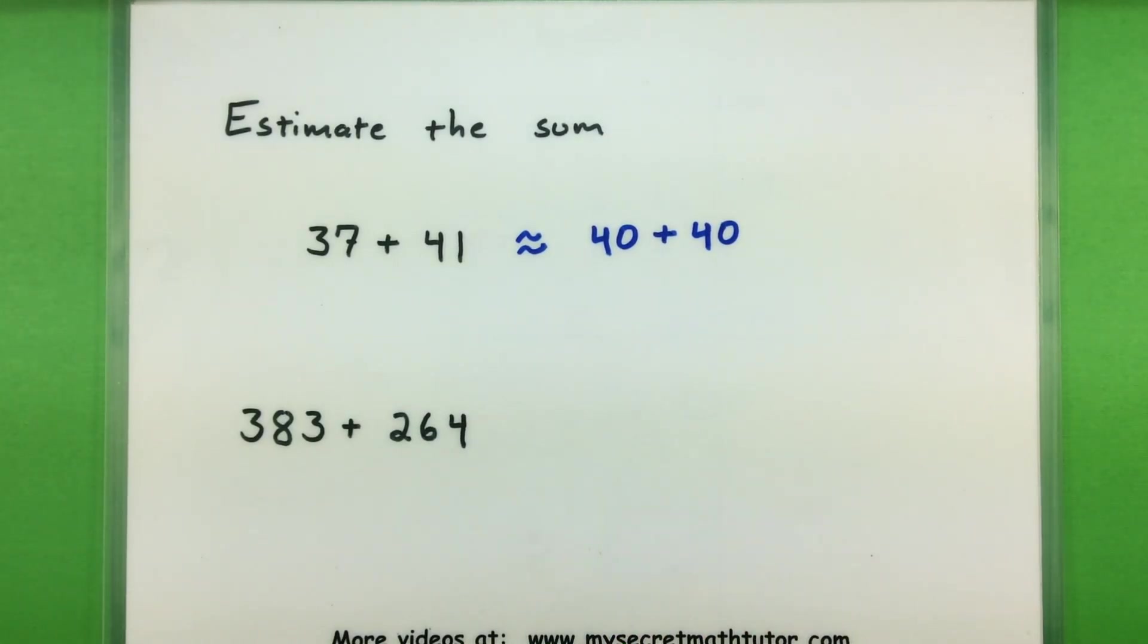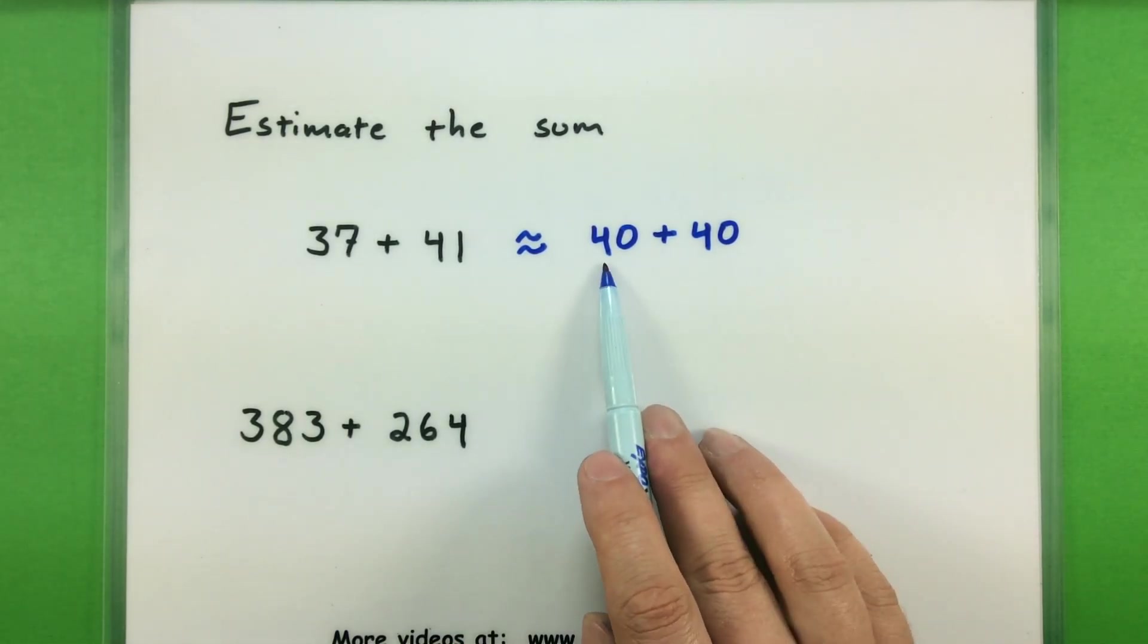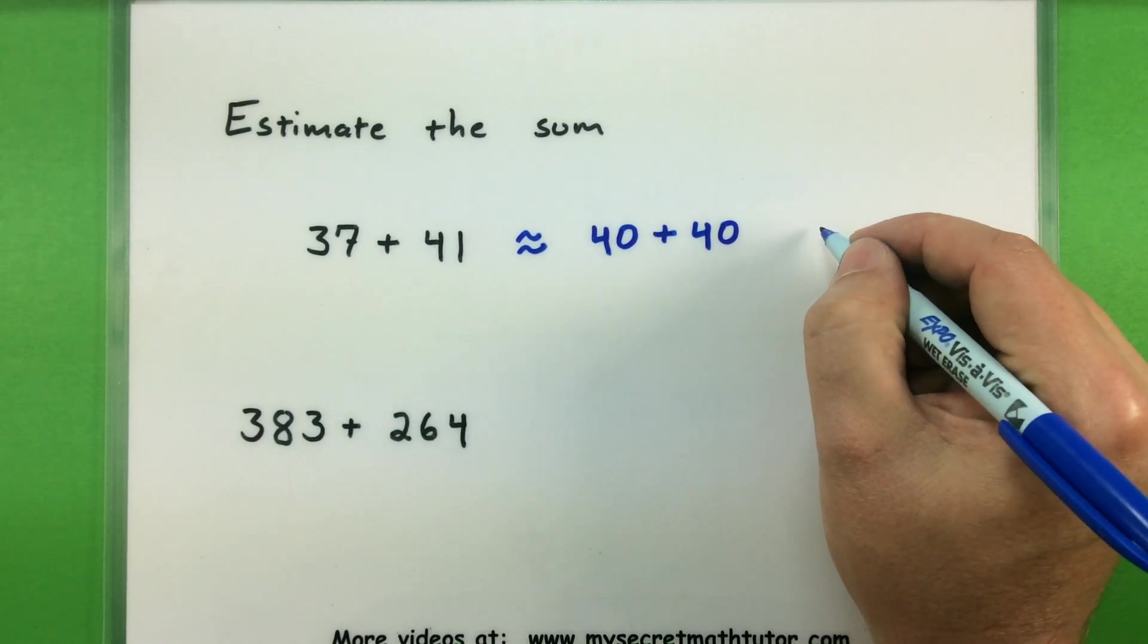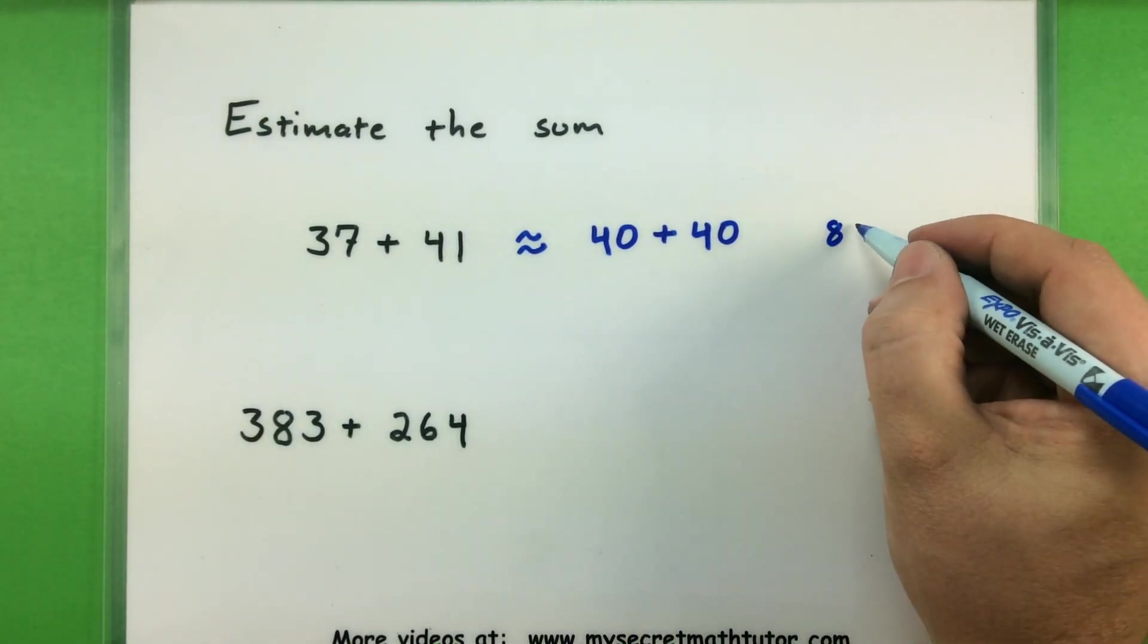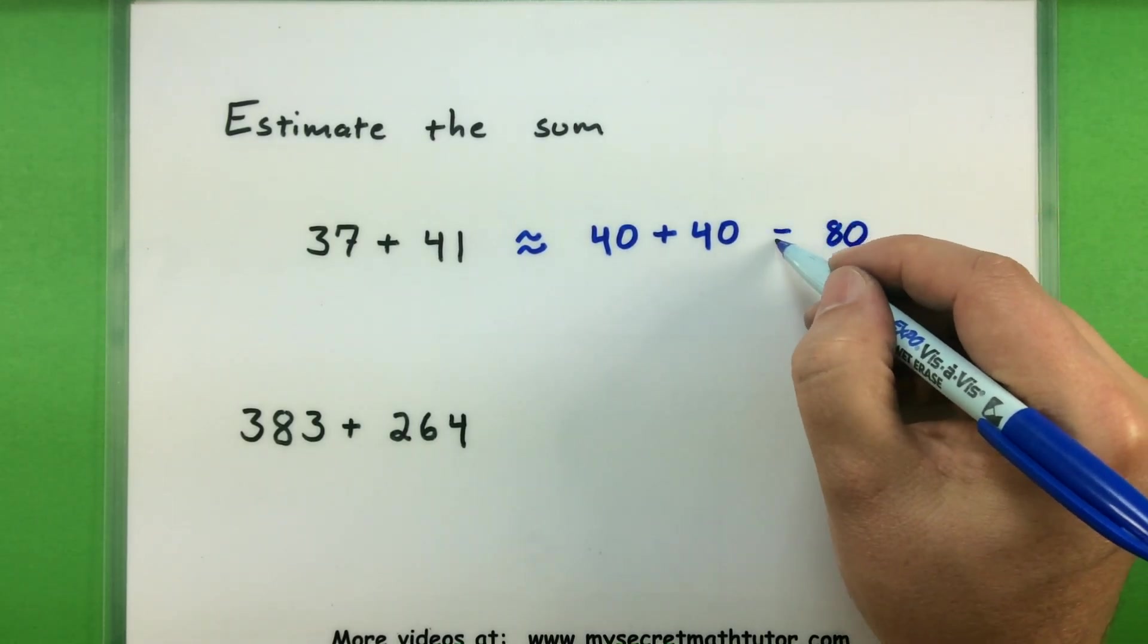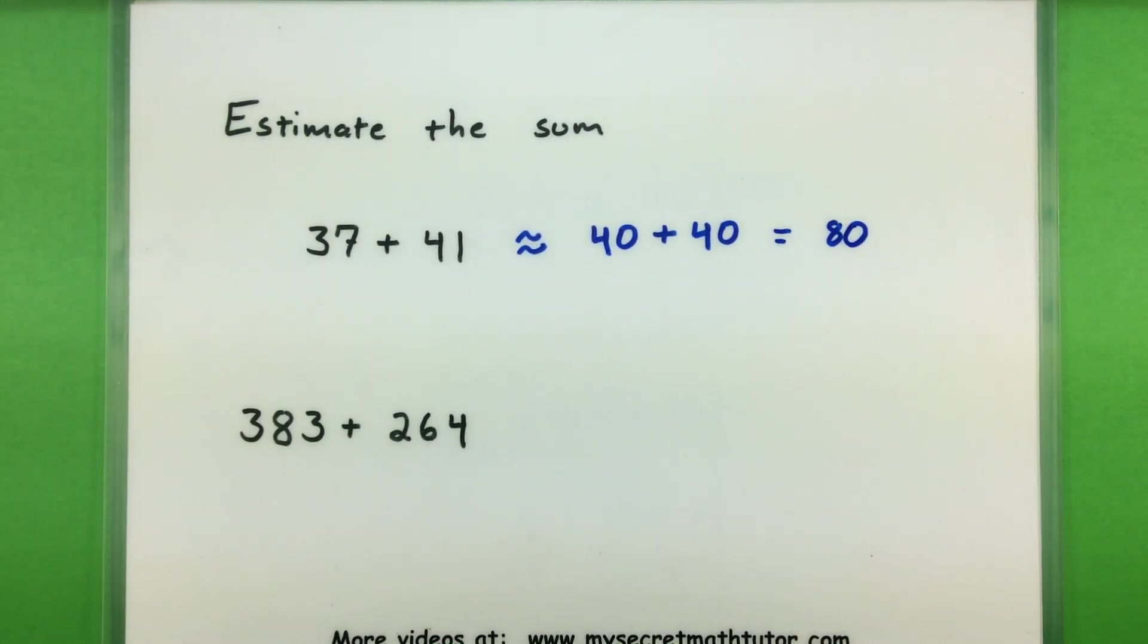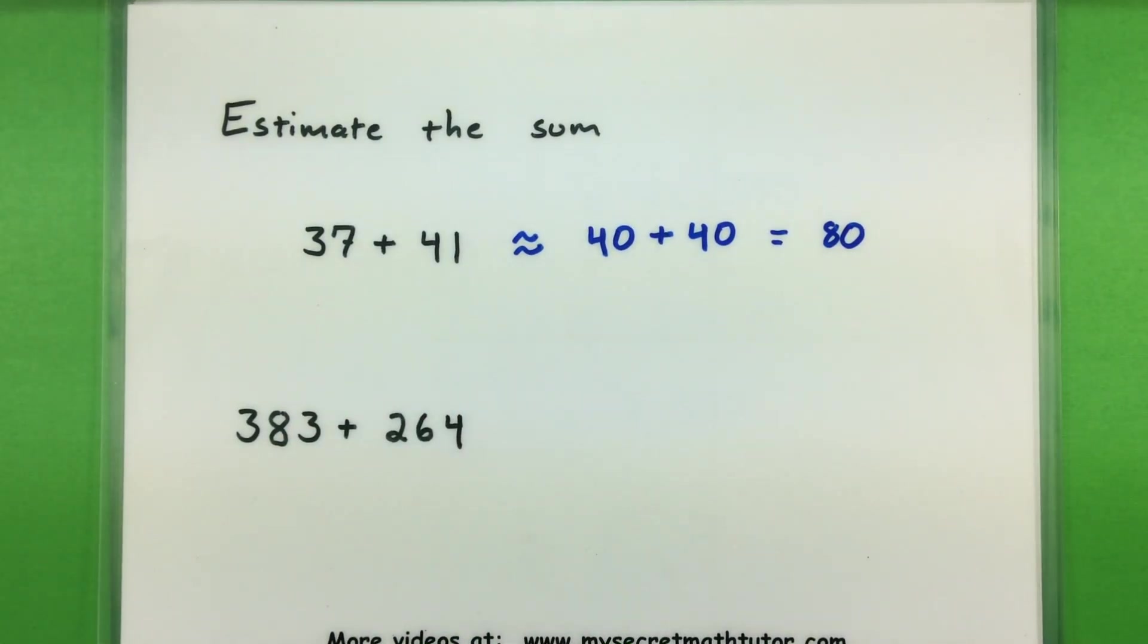So now that I have the two rounded numbers, now we simply want to add these two together. And you can see it really just amounts to adding the fours together. That'll give me an eight. And then the rest of the numbers are just zeros. So I have that my answer, my approximate answer is 80. So the approximate answer to this sum is 80, or I could say a good estimate of the sum is 80.